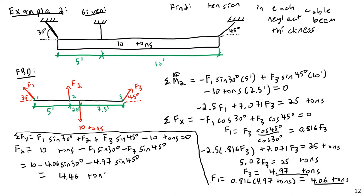I'm pleased how this turned out. Sometimes when I make up problems on the fly they work out well, sometimes not. In this case it worked out well — if the geometry were off we could end up with a negative force in a cable, which wouldn't make physical sense since cables can only pull, not push. A negative would mean compression, like a rod.